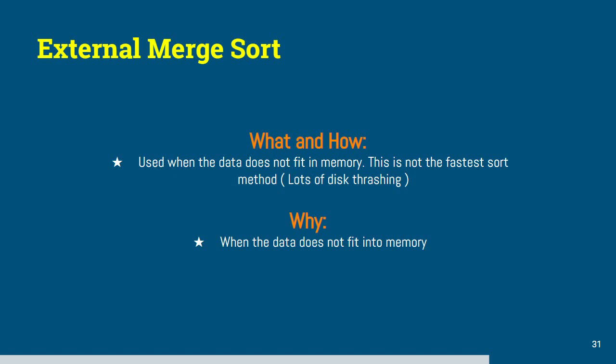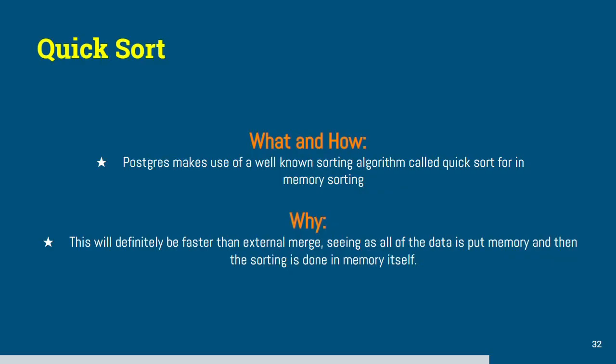External merge sort. So an external merge sort is used to sort when the data does not fit into memory. This is not the fastest sort method, seeing as there's lots of disk thrashing. And the reason why your query planner would fail over to using this is because it could not fit everything into memory. On large data sets, I don't think there's an alternative for something like that. Maybe you can optimize your query, so it doesn't have to do that. But I mean, in a case where you do have to do lots of sorting, I don't know what the solution would be. So why Postgres use that is because the data does not fit into work mem.